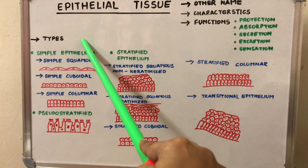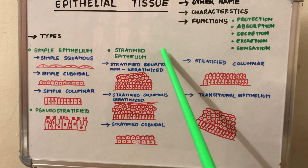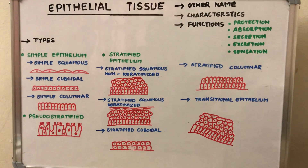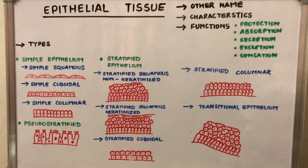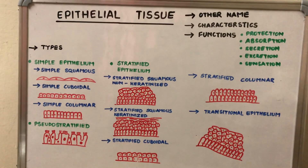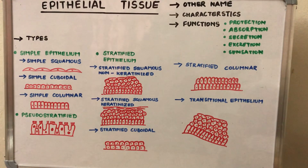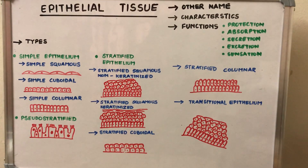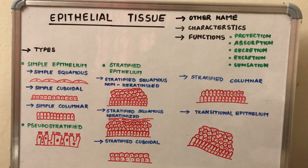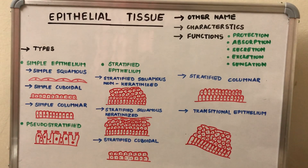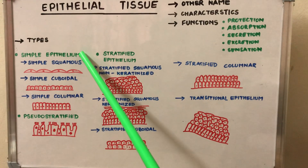Next are the types of epithelial tissue: simple, pseudo-stratified, and stratified epithelium. The classification of the epithelial tissue is based on the number of layers of cells, the shape of the cells, and the cell surface modifications.